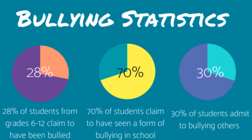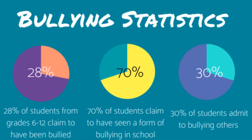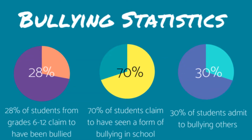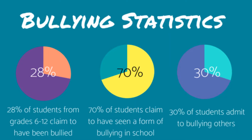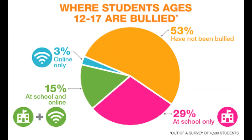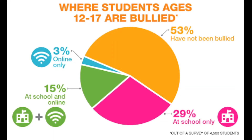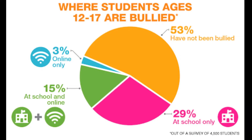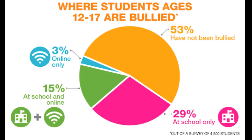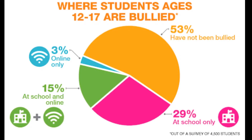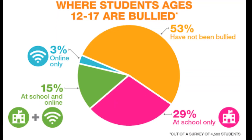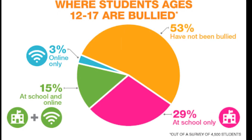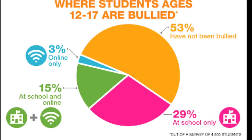Reports of cyberbullying are highest among middle school students, followed by high school students and then primary school students. The percentages of individuals who have experienced cyberbullying at some point in their lifetimes have more than doubled, from 18 percent to 37 percent, from 2007 to 2019. When students were asked about specific types of cyberbullying they had experienced, mean and hurtful comments and rumors spread online were the most commonly cited.